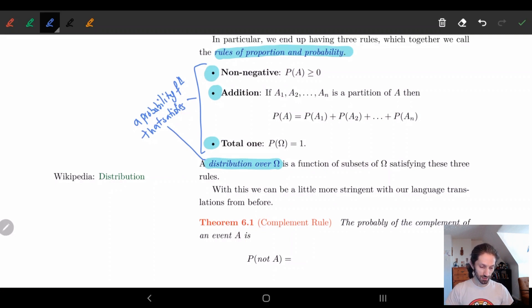So the first thing is just a quick recall of what a distribution is. Remember it's just a function from sets to the real numbers where these three hold: we have non-negativity, we have addition, and then we have a total one. And so let's look at some theorems. What can we come up with all these?